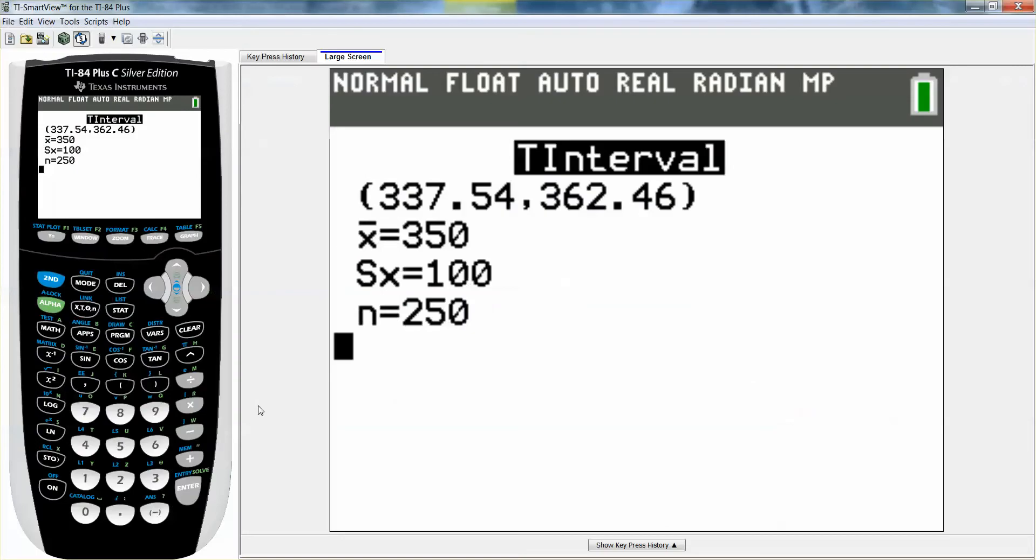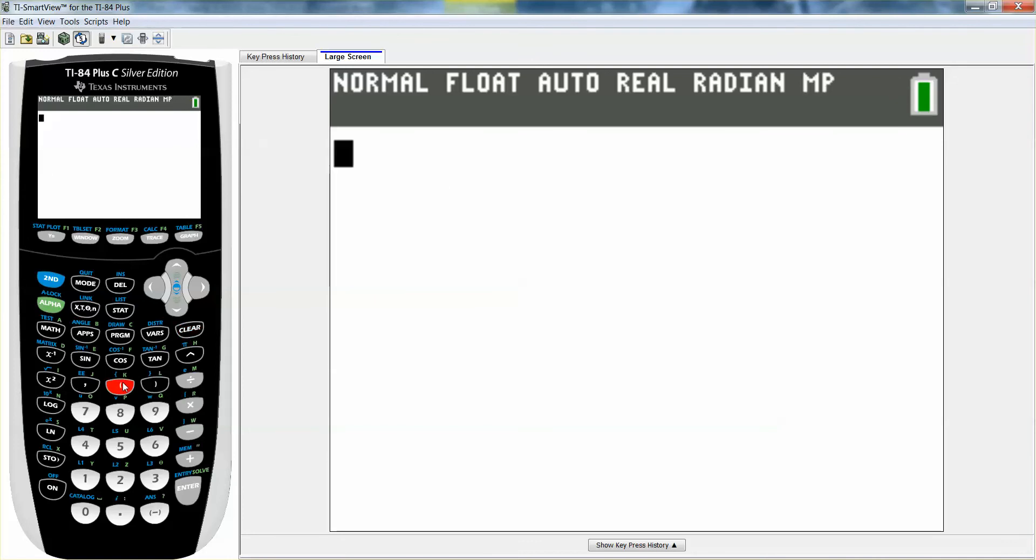So now let me go grab a calculator. And I'm going to do this all at once. That way I don't have to reinvent the wheel every time I go do this. So I'm going to take 378.42 minus 321.58. Close my parentheses. Divided by 2.